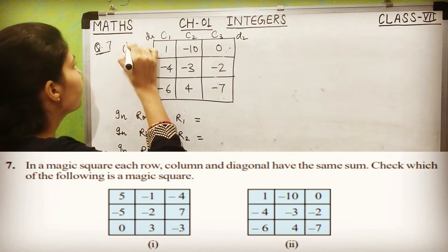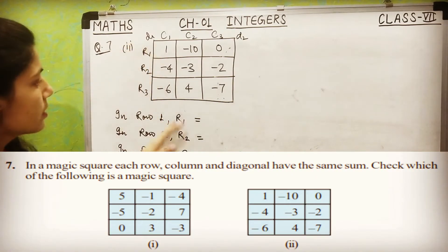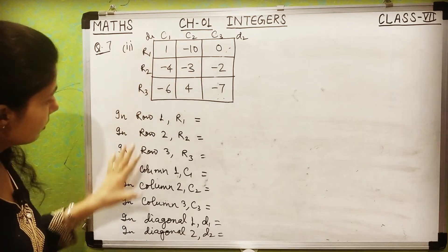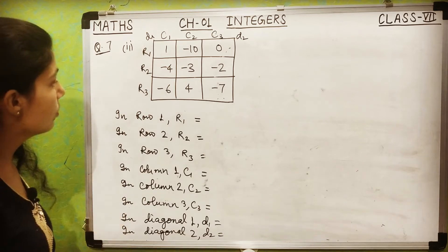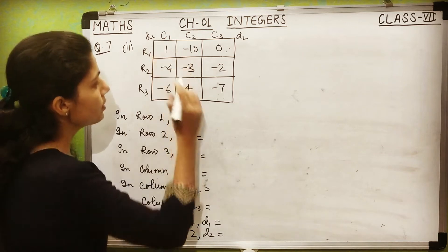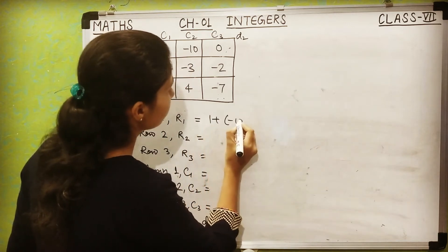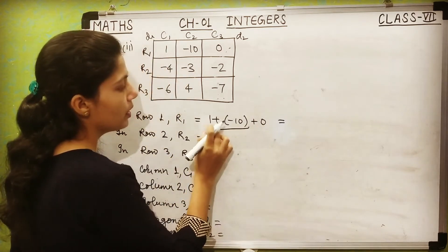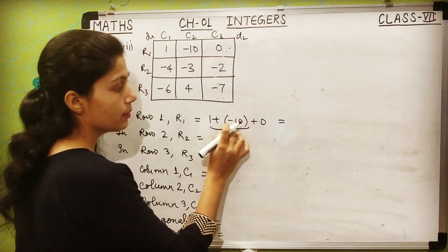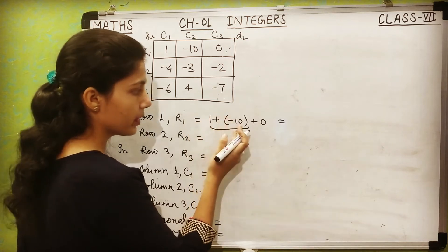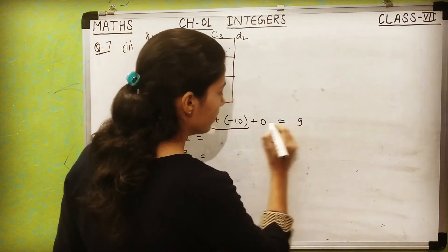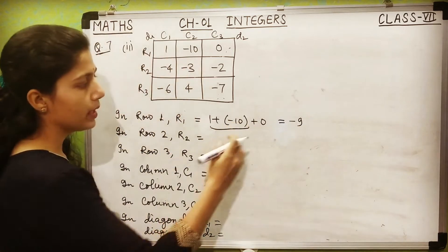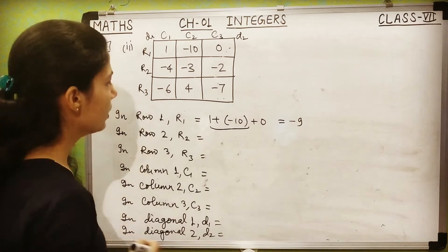Now the second part — a new square with different values. Let's check row 1: 1 + (−10) + 0. First, 1 + (−10): one positive one negative, subtract: 10 − 1 = 9, and sign goes with greater number which is 10, so minus 9. Adding 0 gives minus 9. Row 2: (−4) + (−3) + (−2). Both negative: 4 + 3 = 7, negative sign giving minus 7. Then minus 7 + (−2): both negative, 7 + 2 = 9, giving minus 9.